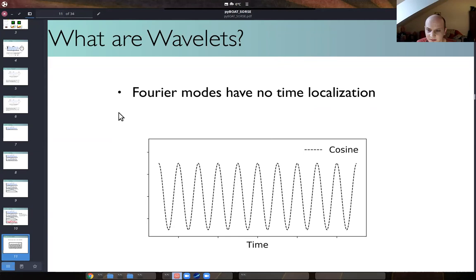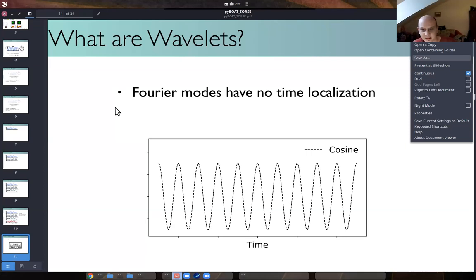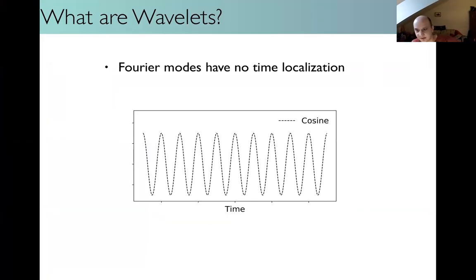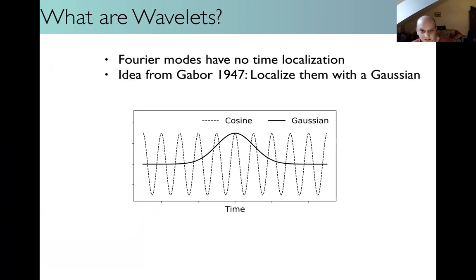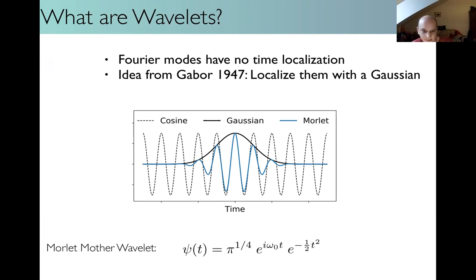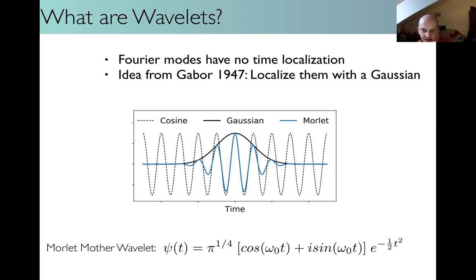The oldest way of analyzing periodic signals is, of course, the Fourier transform, which works by decomposing your signal into cosines and sines. A cosine function comes from minus infinity to plus infinity - the frequency has no time localization. The idea from Gabor in 1947 was to give these Fourier modes a time localization by multiplying a Gaussian onto a Fourier mode. The resulting function is nowadays called the Morlet wavelet. If you look at the formula closely, you see a pre-factor, a complex exponential, and a Gaussian function - and the complex exponential is just our Fourier modes, cosine and sine. So the step from Fourier to wavelets is actually quite easy.